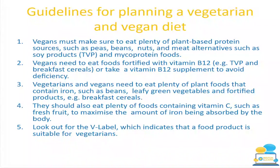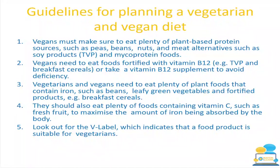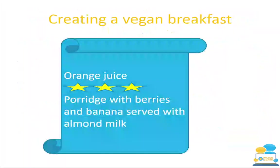Look out for the V label, which tells you a product is suitable for vegetarians. As vegetarianism and veganism become more popular, you'll see this label extensively in shops like Tesco, Aldi, Lidl and Dunnes. This chapter also links with your food labels chapter. It is very likely you'll be asked to create a menu or meal for a vegan, vegetarian, lacto-vegetarian or pescatarian — this could be in an exam or in CBA 2, linked to the culinary skills exam.